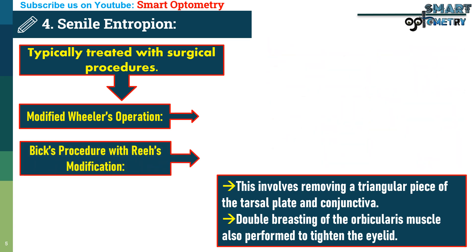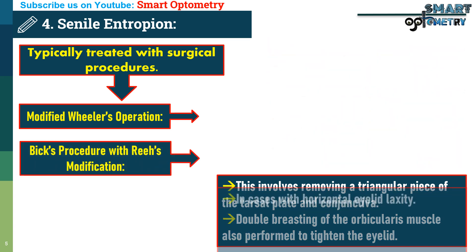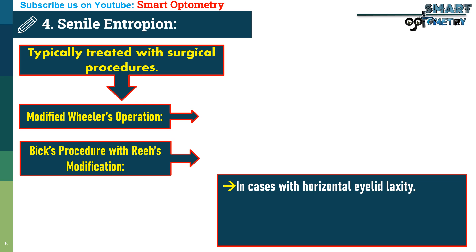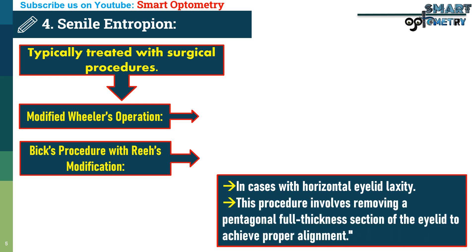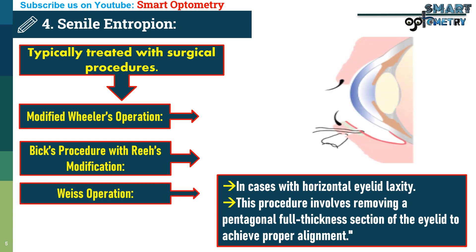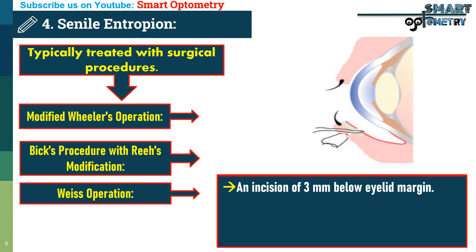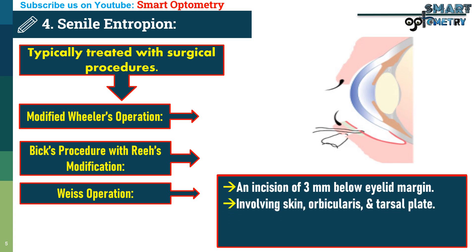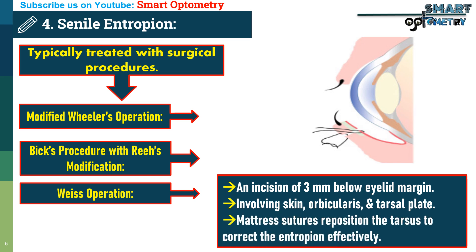BICS Procedure with Rehez Modification: In cases with horizontal eyelid laxity, this procedure involves removing a pentagonal full-thickness section of the eyelid to achieve proper alignment. Waze Operation: An incision is made 3 mm below the eyelid margin, involving the skin, orbicularis muscle, and tarsal plate. Mattress sutures reposition the tarsal plate to correct the entropion effectively.